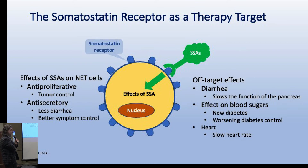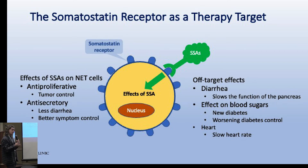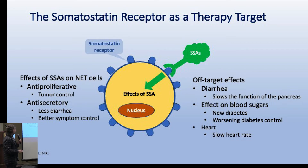We also see off-target effects, including diarrhea because the pancreas is not making necessary enzymes to digest fat - that's called steatorrhea, or increased fattiness in the stool. We have ways to test and treat these. It can also raise blood sugars and cause diabetes - a very recent paper suggests this is more common than we thought - and can occasionally slow the heart rate, but usually not to a problematic degree.